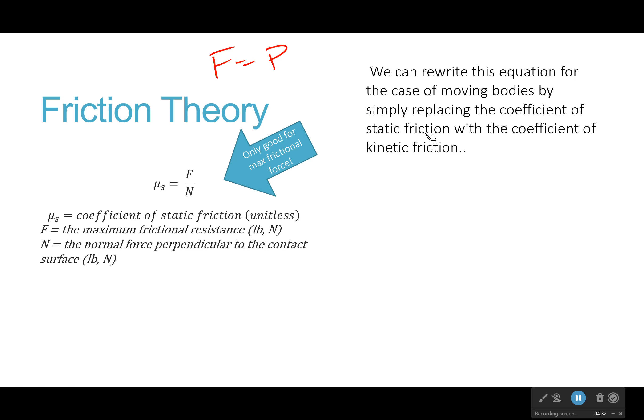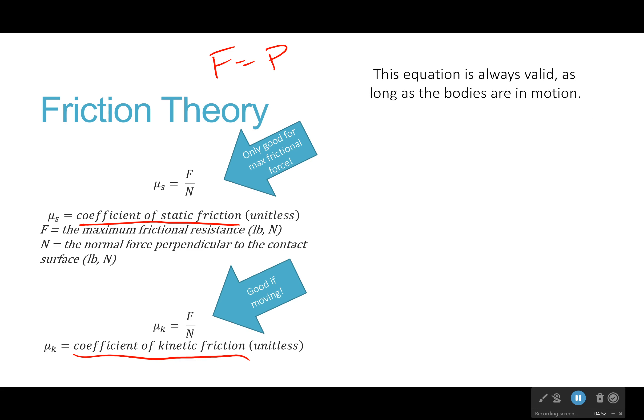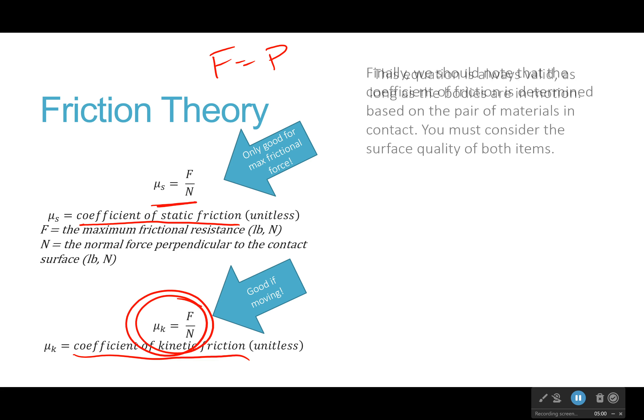Now, we can rewrite this for when we have moving bodies by simply changing our coefficient. This coefficient of static friction and coefficient of kinetic friction are always given. Like, you'll be given two materials and maybe it'll be a table, but most of the time it's just given in the problem itself or it's something you have to solve for. Now, this equation is always valid. This one's only good for finding the max frictional force. This one is good for all cases.